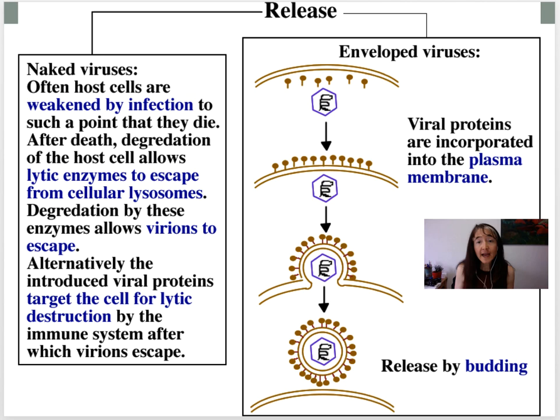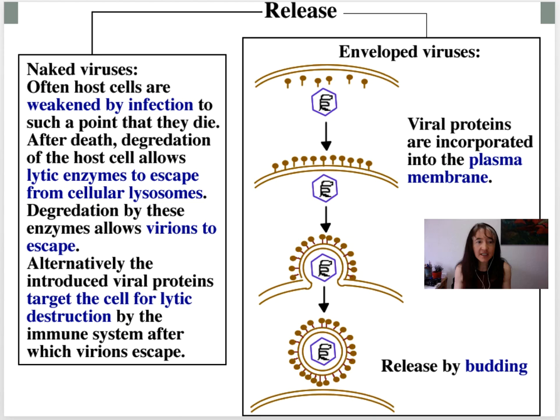Now we're primed to talk about how viruses get out of the cell. Once they've encoded for all their proteins and gone through maturation and packaging, naked viruses must lyse the host cell in some way — or trigger its lysis — to be released. Sometimes they simply weaken the host cell to the point where it dies. A weakened cell can have lysosomes release their lytic enzymes in self-degradation.